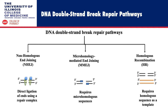Non-homologous end joining or NHEJ, micro-homology mediated end joining or MMEJ, and homologous recombination or HR. In NHEJ there is direct ligation of the broken ends using a repair complex, whereas in micro-homology mediated end joining there is a requirement for a micro-homologous sequence, and in homologous recombination there is a requirement for a homologous sequence as a template.